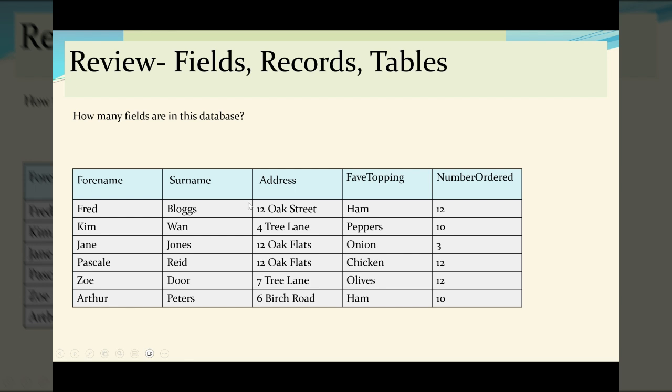Let's do a quick review of fields, records and tables. How many fields are in this database? So you pause the video, have a think, come back for the answer. Forename, Surname, Address, FaveTopping, and number ordered. That is five fields.